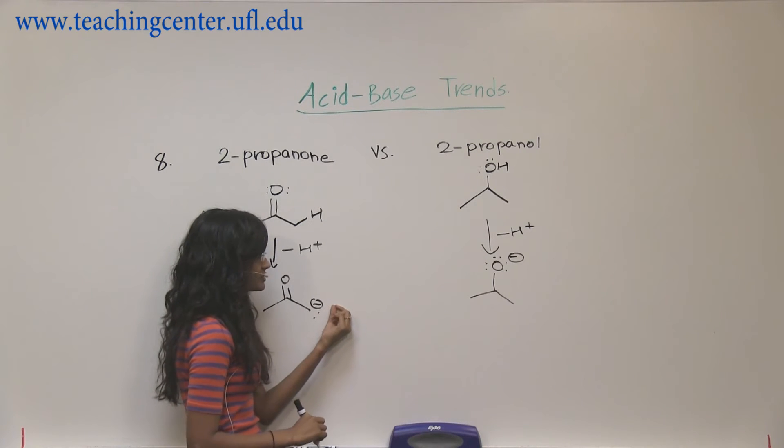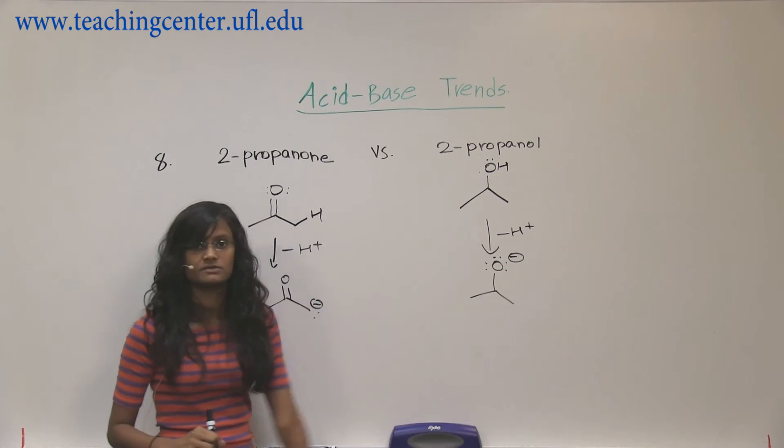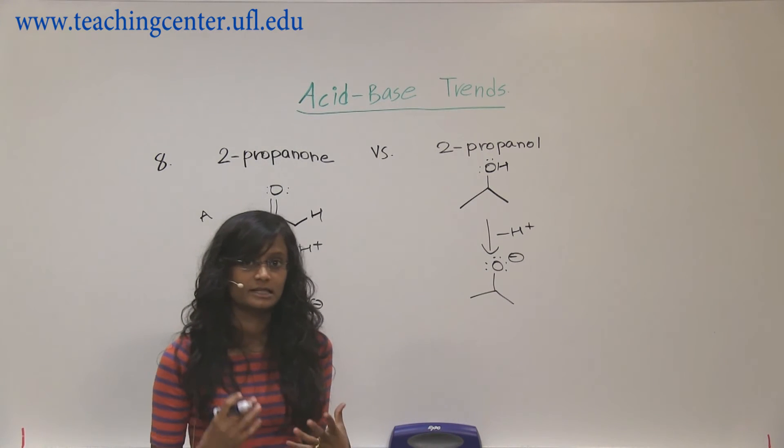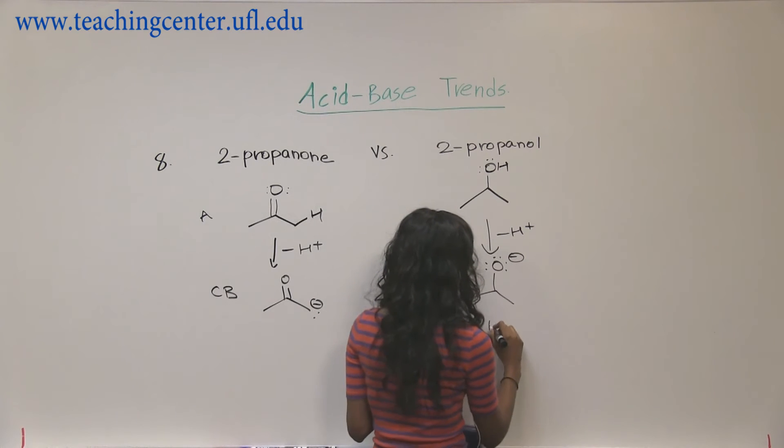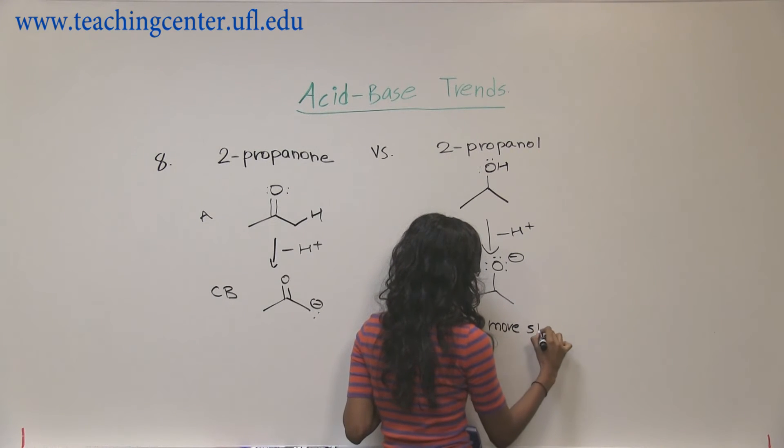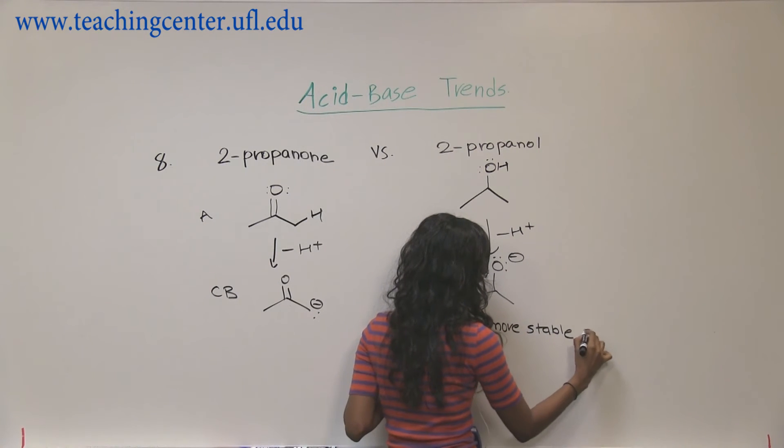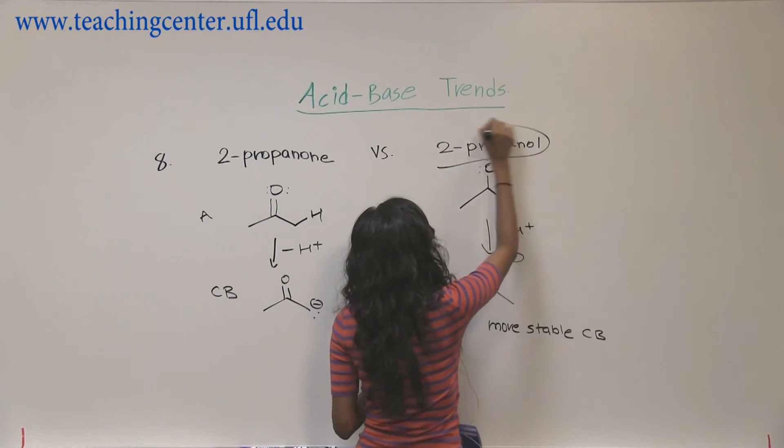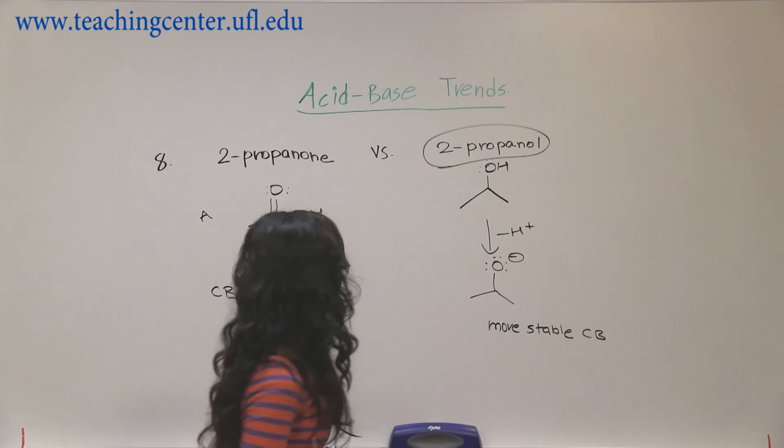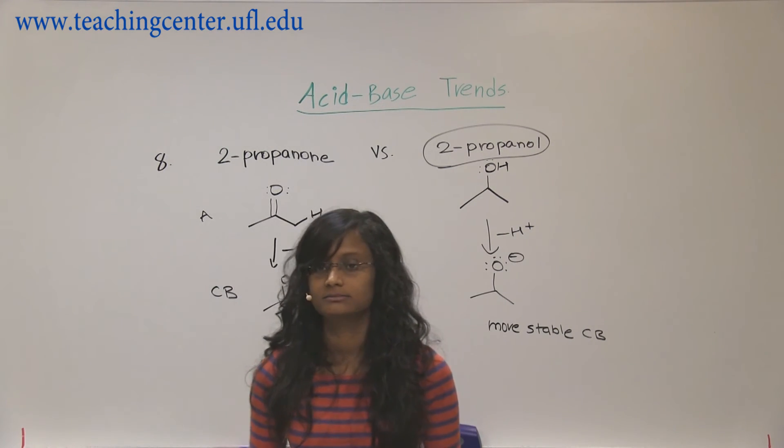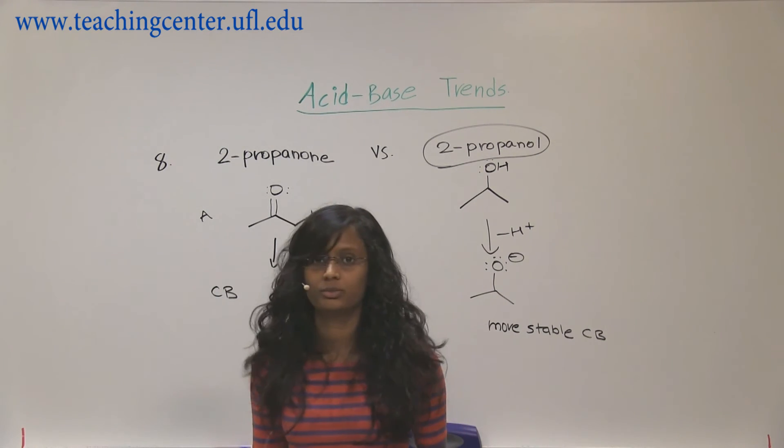Now carbon with a negative charge, oxygen with a negative charge, obviously oxygen likes it better because it's more electronegative. That means this is more stable conjugate base, so this is going to be stronger acid. All right, so this is pretty straightforward. Number eight answer is two propanol.